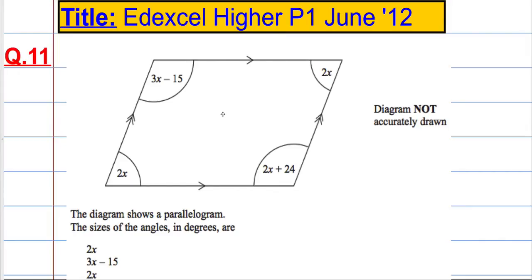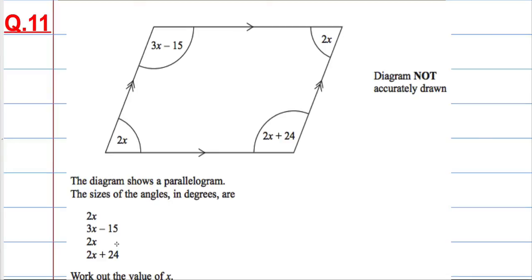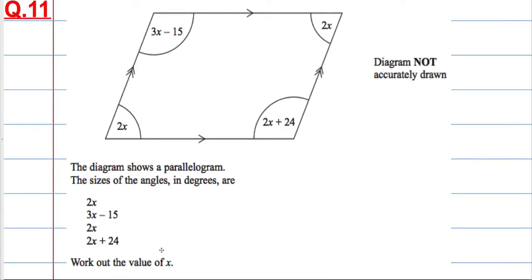Question 11. We are given a parallelogram. It is not drawn accurately and we are given some angles here. We are told the sizes of the angles in degrees are as follows. We are asked to work out the value of x.